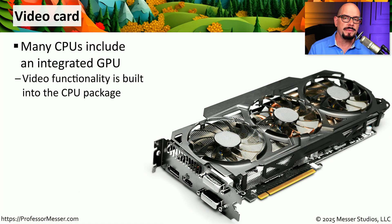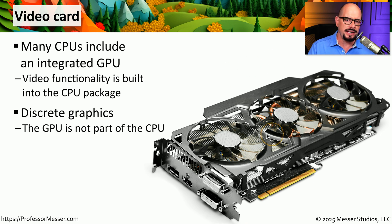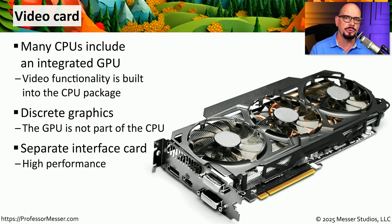The CPUs of many motherboards support an integrated graphics function that is built into the CPU itself. But if you're doing some type of high-end graphics processing, video editing, or gaming, you may want a discrete graphics adapter. This is a graphics processing unit that is external to your central processing unit. This separate graphics card provides additional CPU power and memory so that you can perform the highest-end graphics functions on your system.